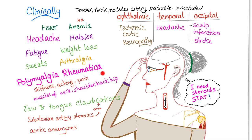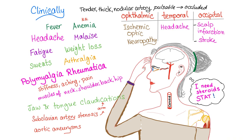There is a very important and common association with polymyalgia rheumatica. Polymyalgia rheumatica involves stiffness, aching, and pain of the muscles — myo means muscle — of the neck, shoulder, back, and hip. Poly means many, myo means muscle, algia means pain.